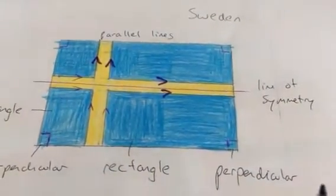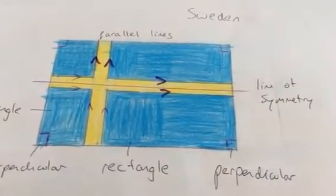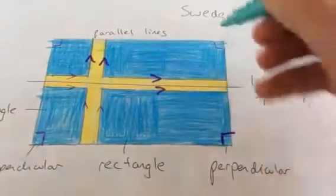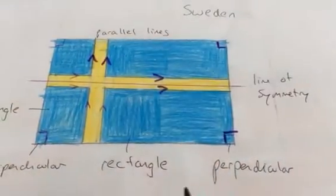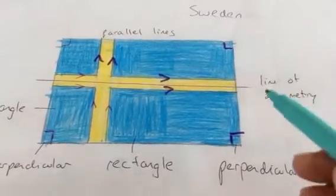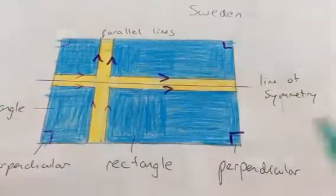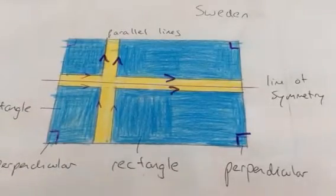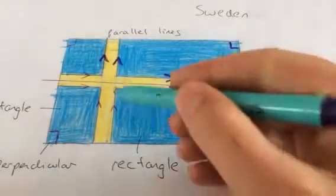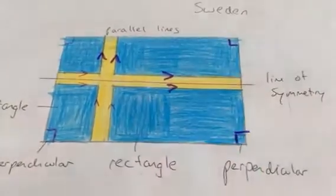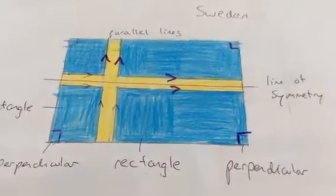Are there any perpendicular lines meeting at right angles? Yes, in all the corners. So probably nearly every flag is going to have some perpendicular lines. So that's fantastic — we've got line of symmetry, parallel lines, and perpendicular lines. And can you tell me what shapes are used in this flag? What's the shape here? A rectangle. Fantastic. So that's Sweden.